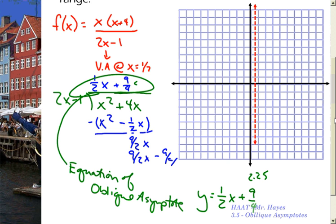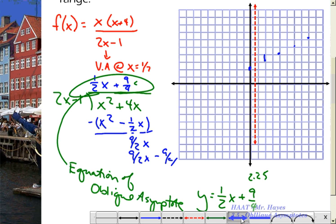So now how to plot this? Well you have a y intercept, you have a slope, welcome back to algebra 1. So I'm going to start about 2 and a quarter, go up 1 to the right 2, up 1 to the right 2, up 1 to the right 2, and then draw in your slant asymptote.